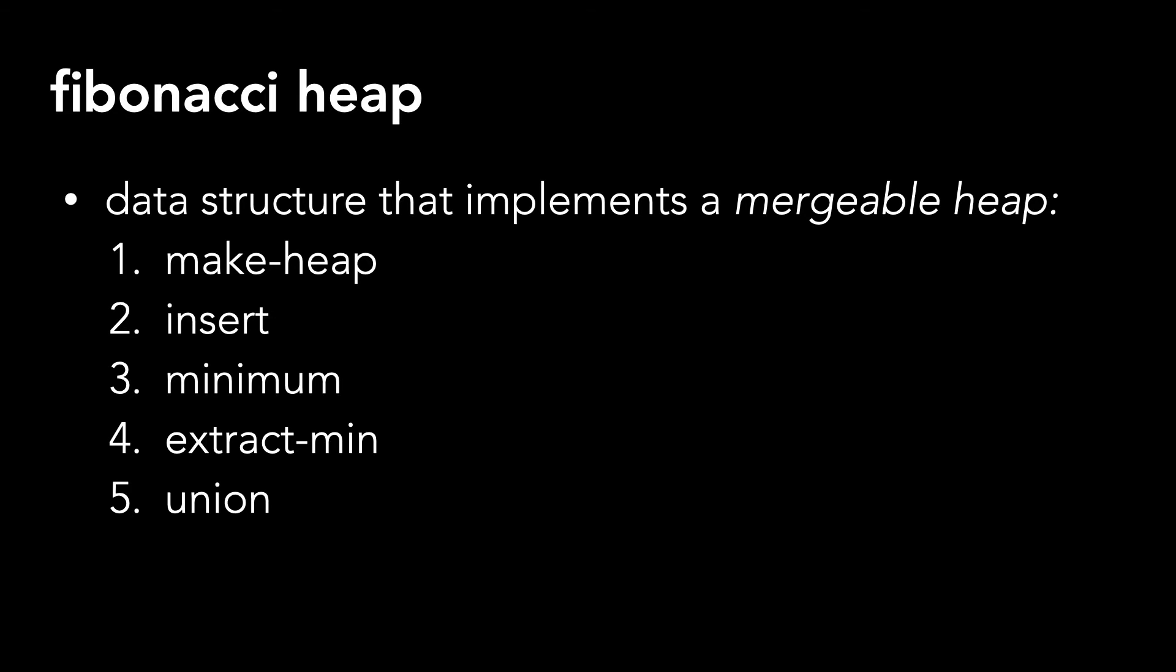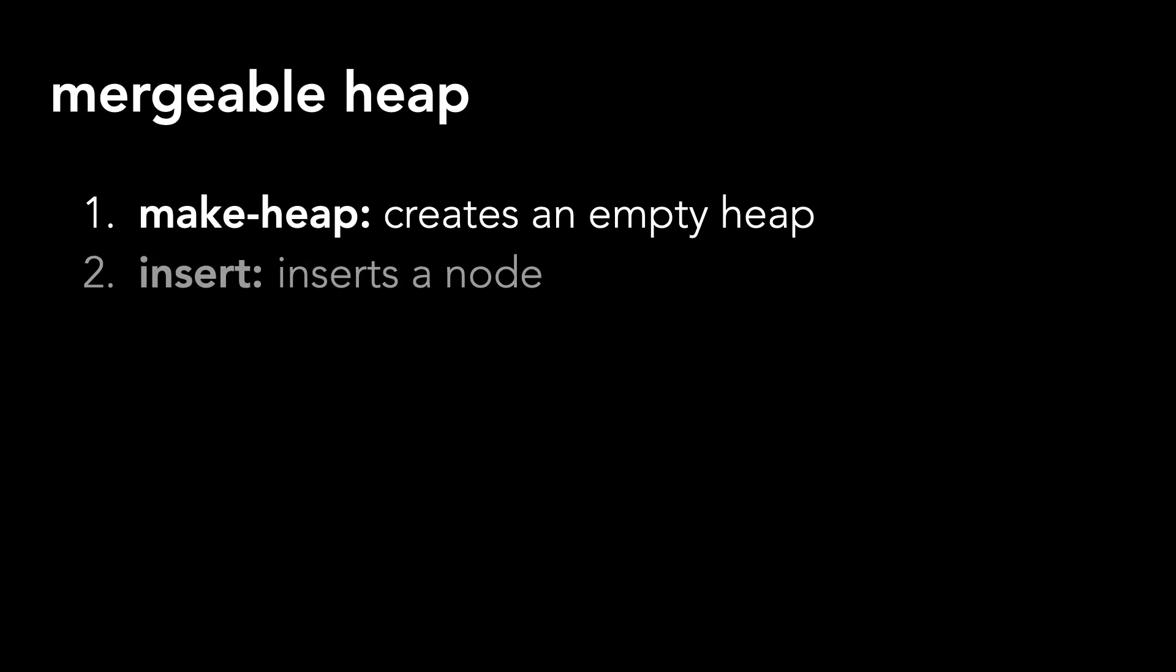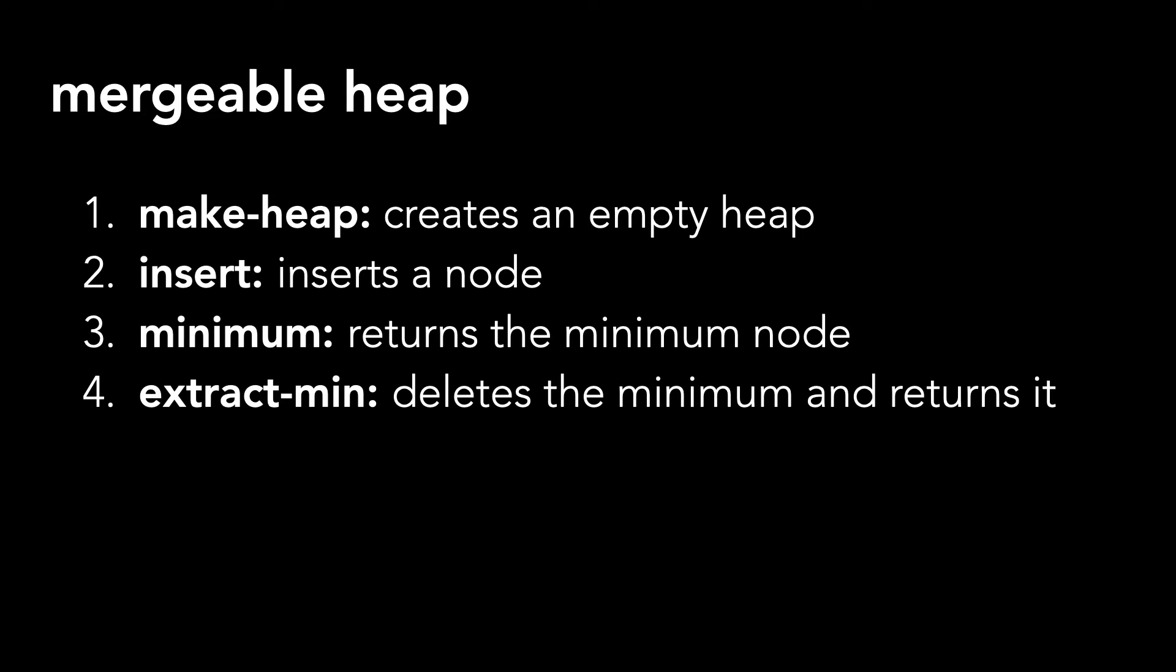Let's break down each of these methods. Make heap creates an empty heap. Insert inserts a node into the heap. Minimum returns the minimum node. Extract min deletes the minimum node and returns it. And union merges two heaps.